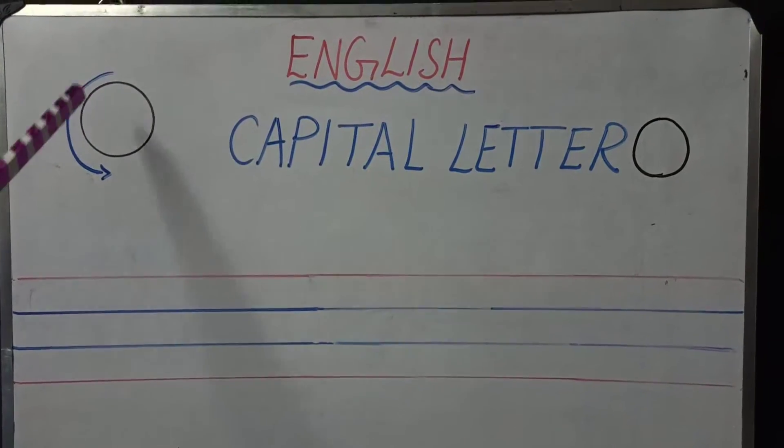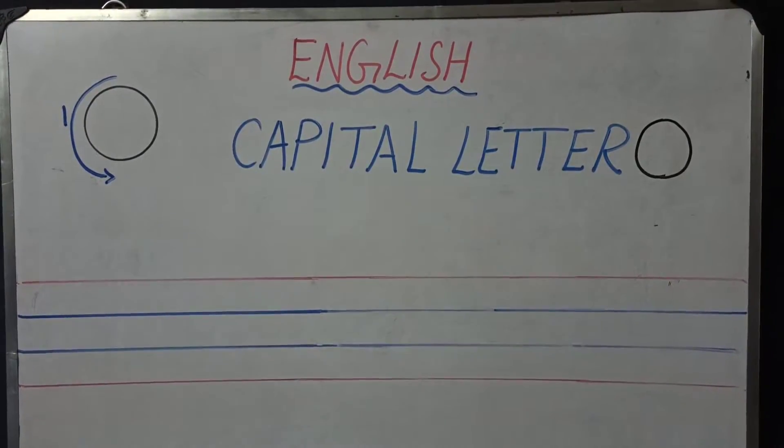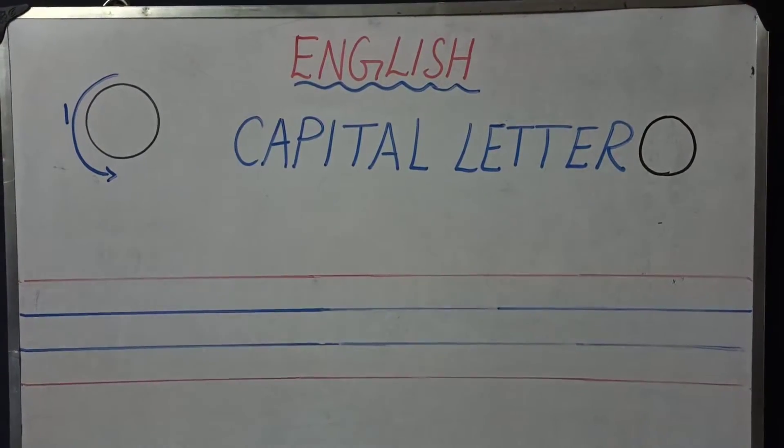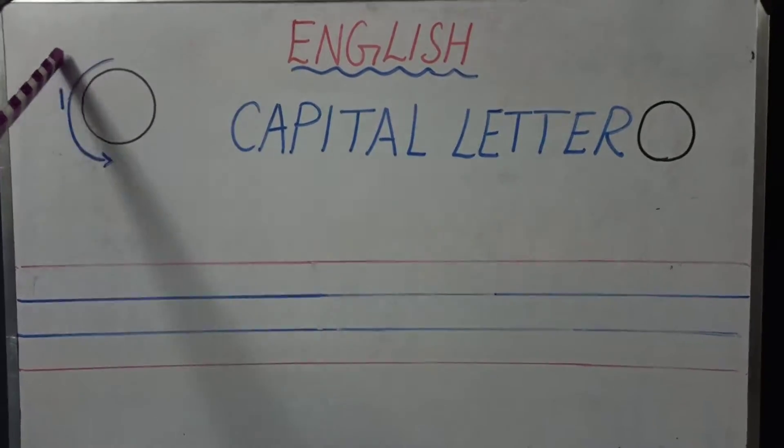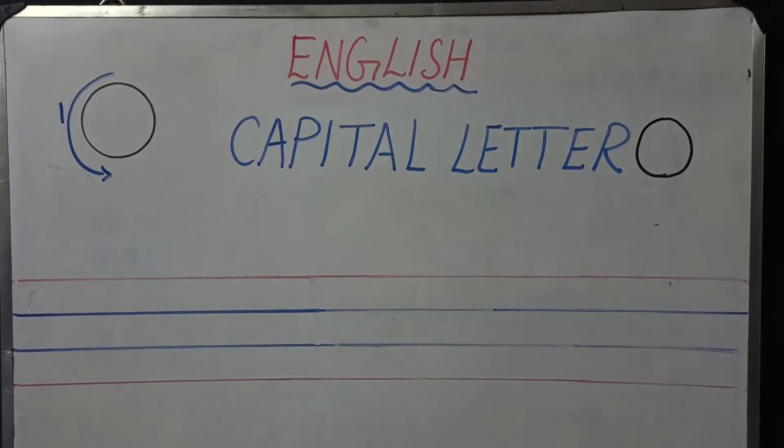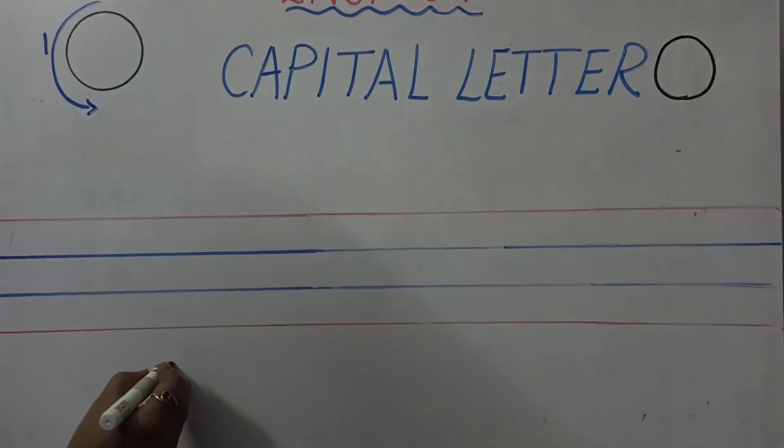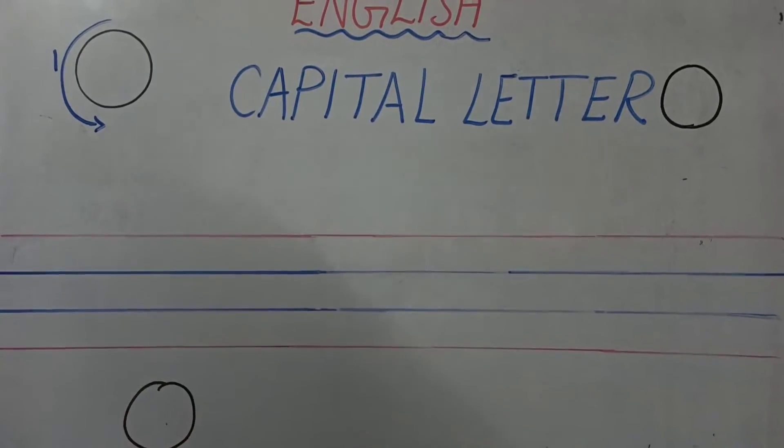Join the dot again without taking out your hand. You should not take out your hand when you are writing letter O. Now this is called clockwise direction. Always O should be written in clockwise direction.